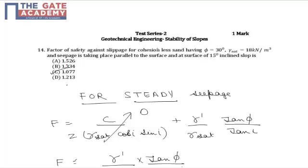soil parameters are given for cohesionless soil: phi is 30 degrees, gamma sat (saturated unit weight) is 18 kN per m³, and seepage is taking place parallel to the surface